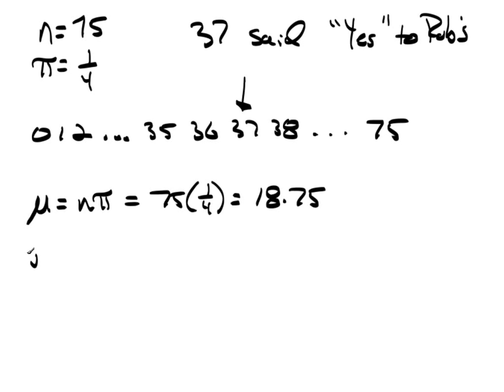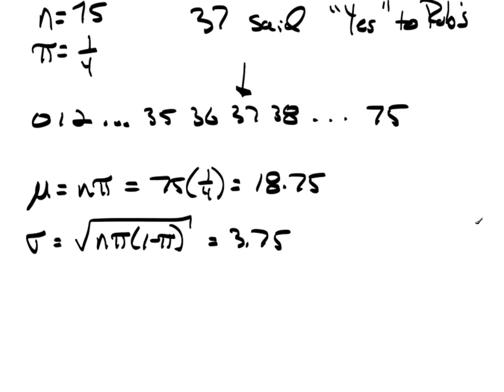The standard deviation here, sigma, equals the square root of N times pi times 1 minus pi, which when you put in those values, you're going to get 3.75. So let's take a look and see how many standard deviations this is away. So I have 37 minus the mean, which is 18.75. That's a distance between what was observed minus the mean. So that's the observed minus mu. Divided by the standard deviation, 3.75.